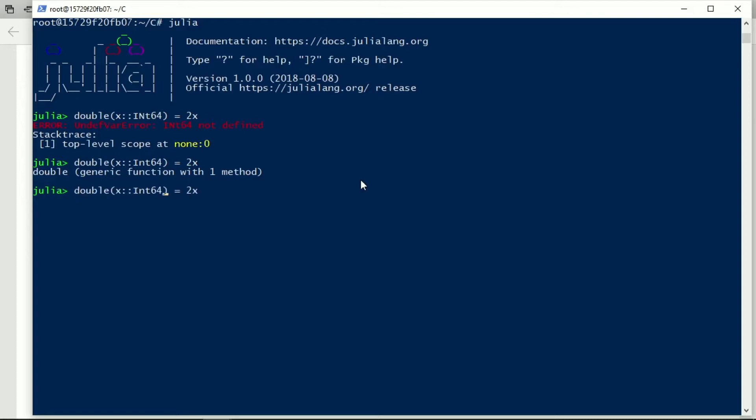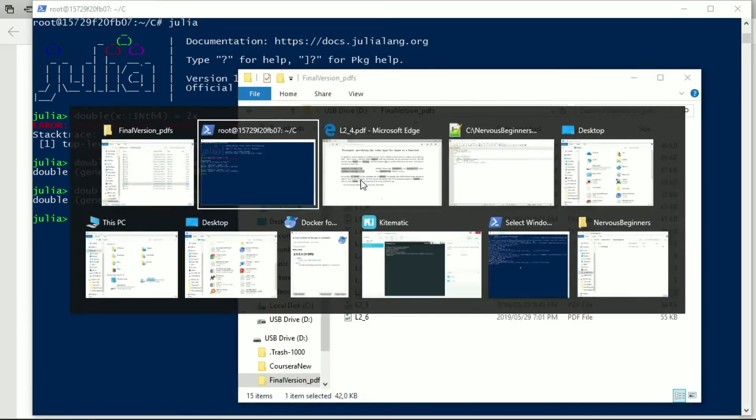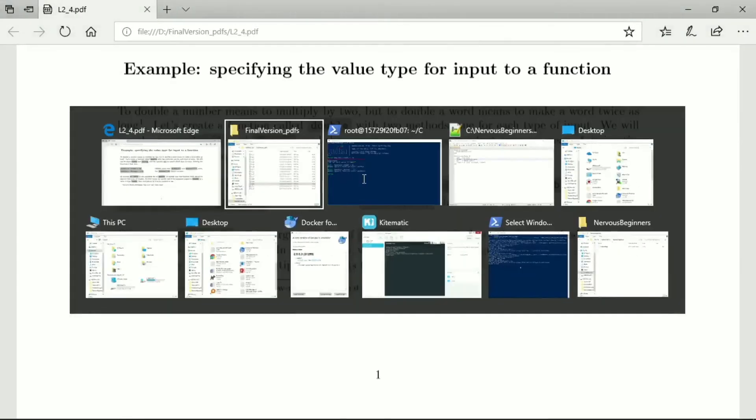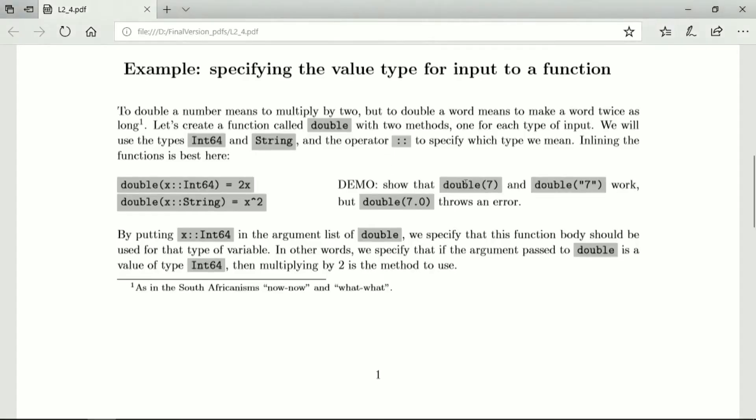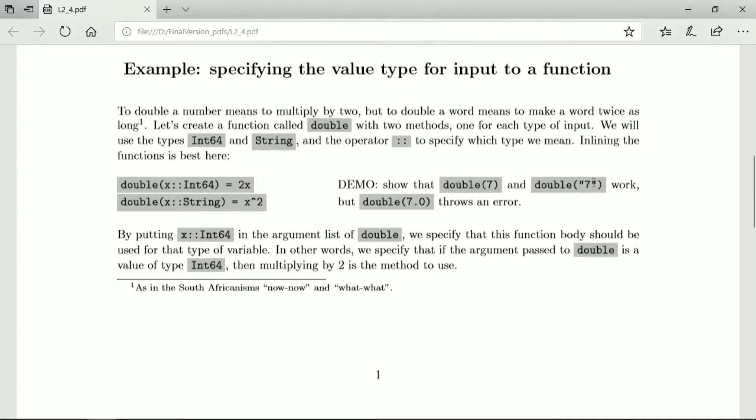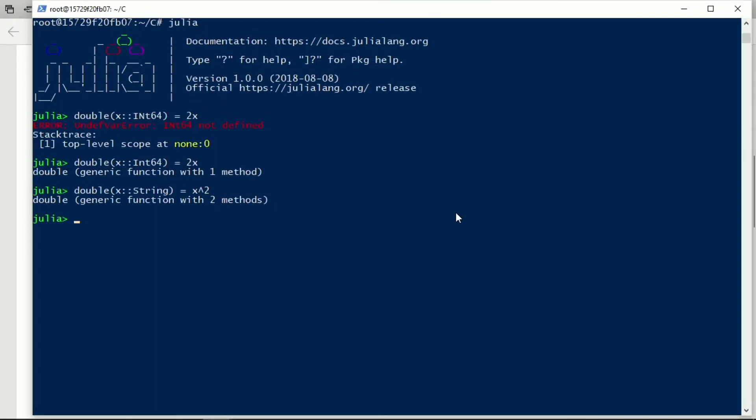Okay, and we can also instead say we make it of type string, and then we want x repeat two. And now we can test it. So the examples on which I want to test it are double 7, and the string 7, and then double float64.